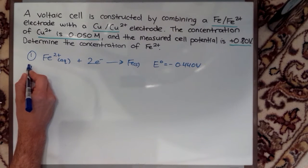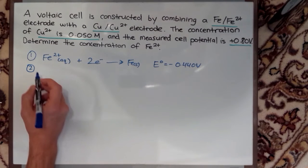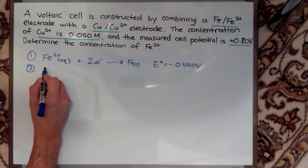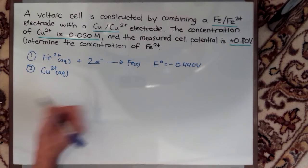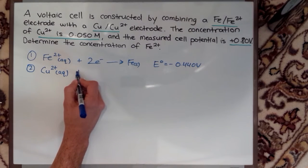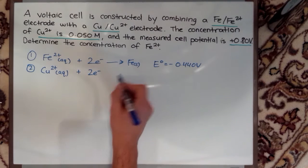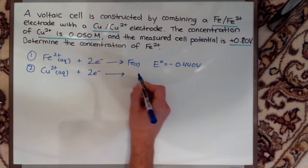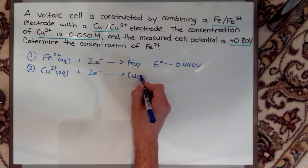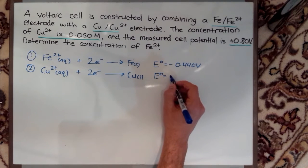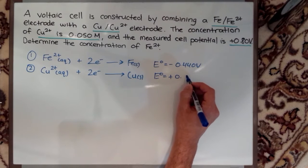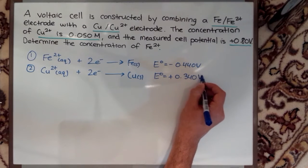If I do the same thing with my Cu2+ electrode, I have Cu2+ aqueous plus two electrons goes to Cu solid and the potential for that is positive 0.340 volts.